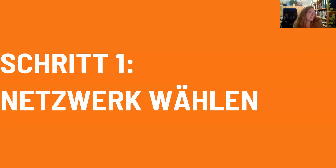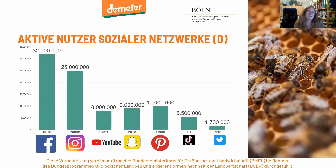Man würde damit starten, dass man zunächst ein Netzwerk für sich auswählt, nachdem man für sich definiert hat, welche Ziele man hat und welche Zielgruppen man erreichen möchte. Die Folie zeigt, wie viele aktive Nutzer sich in welchen sozialen Netzwerken in Deutschland tummeln – da sieht man ganz eindeutig, dass Facebook und Instagram absolute Spitzenreiter sind, weswegen wir uns heute auf diese beiden konzentrieren.